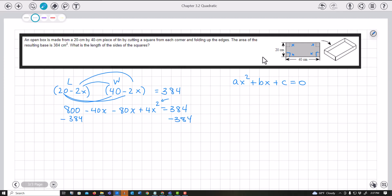First, I subtract 384 from both sides, giving me 416. I combine these as negative 120X plus 4X² equals zero. Let's put it in standard form with the squared term first, then the X term, then the constant.